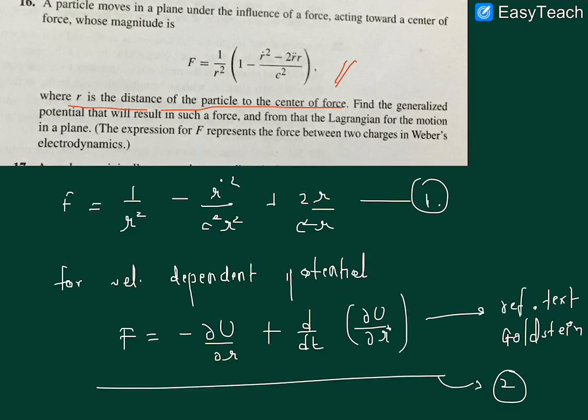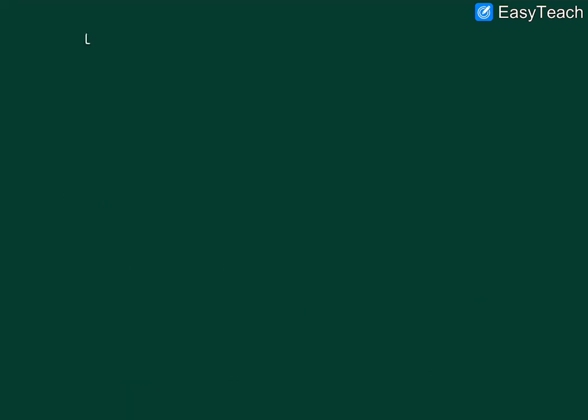If you want this r double dot, then we have to take the time derivative of r dot. So let's pick a term: two r dot over c square r.